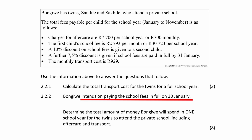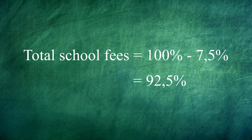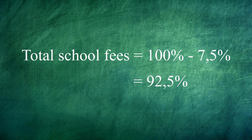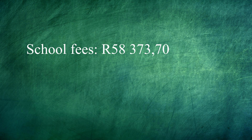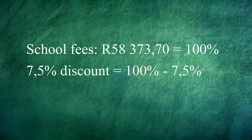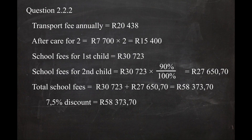Since the parent intends to pay the school fees in full before the end of January, she qualifies for a 7.5% discount. The total school fees for the twins will be 92.5% of the total school fees calculated above. So: 58,373 Rand 70 cents multiplied by 92.5% divided by 100%, which equals 53,995 Rand 67 cents.